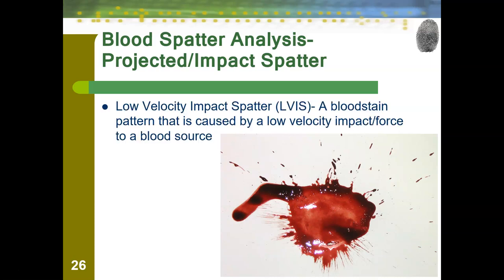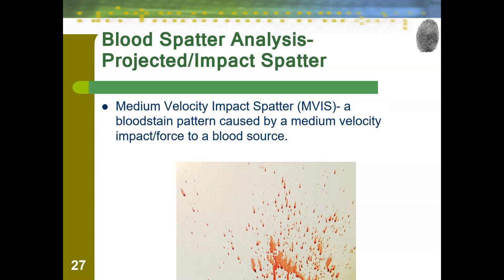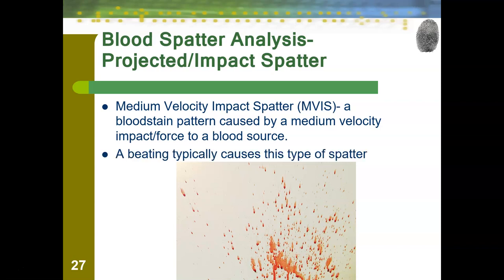Low-velocity impact spatter is a bloodstain pattern caused by a low-velocity impact or force to a blood source. A lot of times this is someone who has experienced some sort of injury and is actively bleeding. That is compared to medium-velocity impact spatter, which is caused by a medium-velocity impact or force to a blood source — a beating is typically what causes this. You can see the difference as we move from low to medium: we see individual droplets that are much more spread out, but still clearly visible.